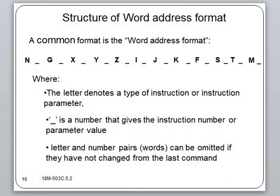The N-word is used to identify the sequence number. It is the most widely used identification command and is used to identify individual blocks within the program. Usually 3 or 4 digits are used, and leading or trailing zeros are not suppressed in the N-word.